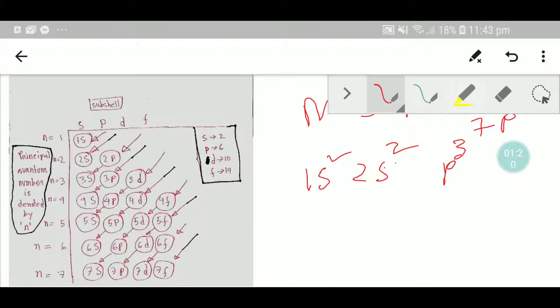So here we have to write 2p orbital. Here we have 2 plus 2, 4 plus 3, that is seven electrons.